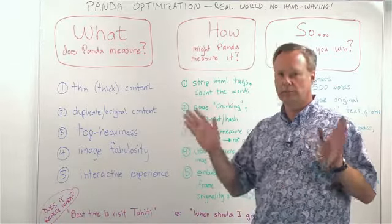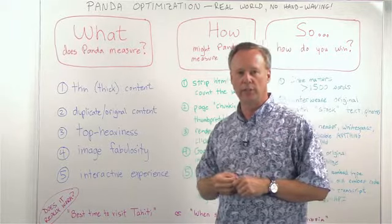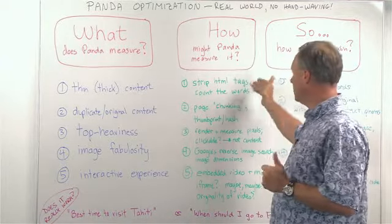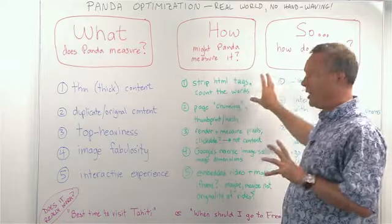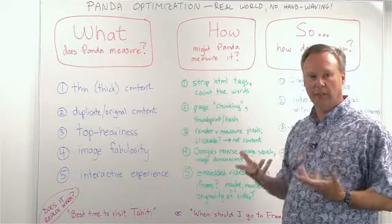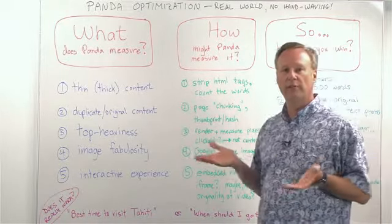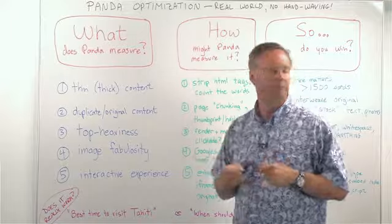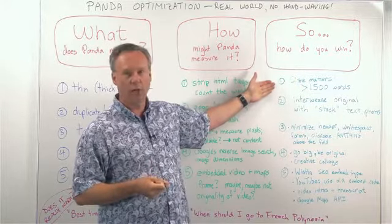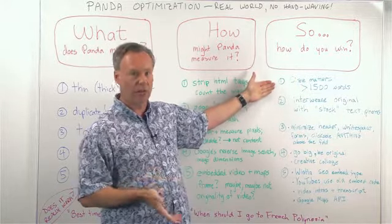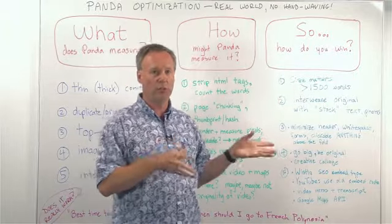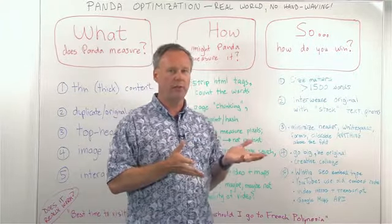They averaged this over 10,000 to 20,000 different keyword searches. So strip out the HTML tags, count the words you've got left, analyze your own pages, and see if you're up near that 1,500 mark. How do we win? This is all about size — at least 1,500 words, pushed to 2,000 or 2,500 if you can.